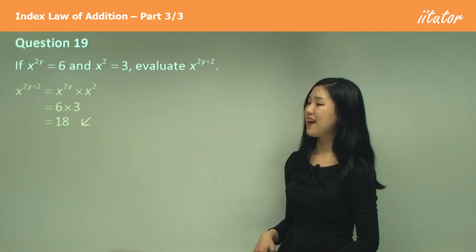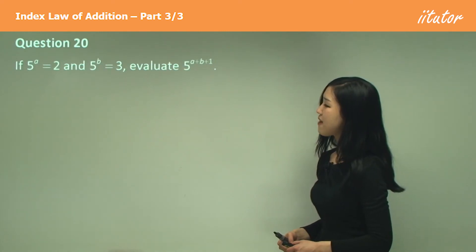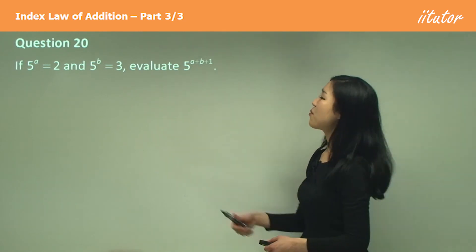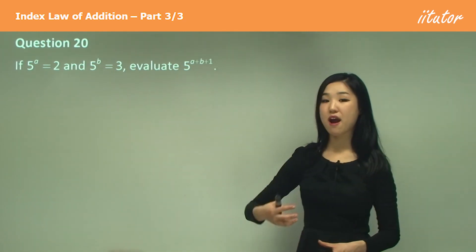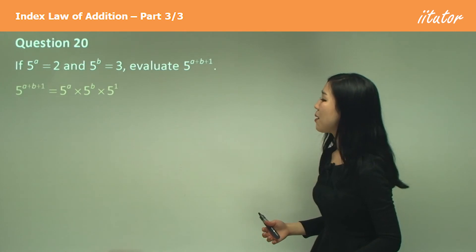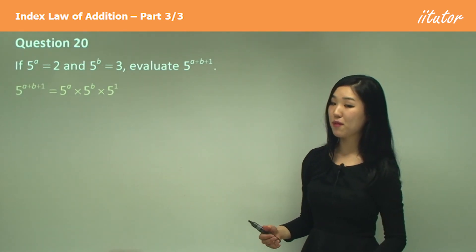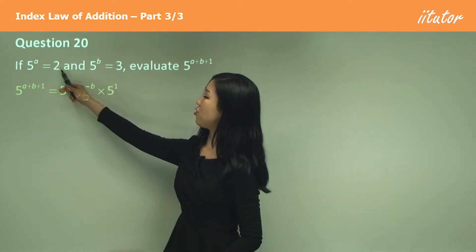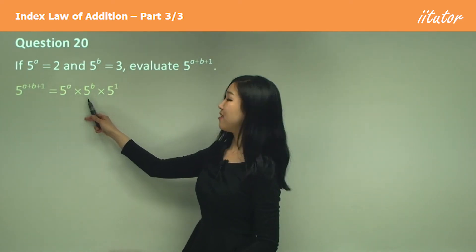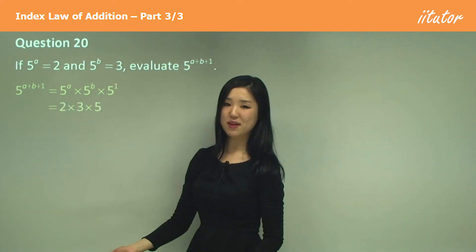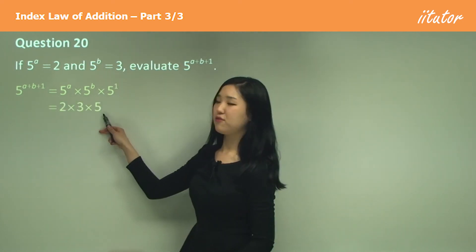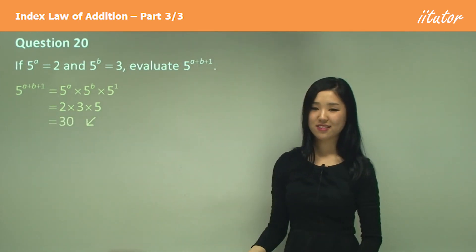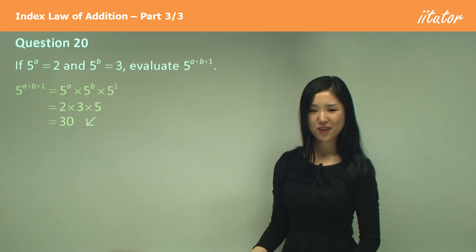They give us 5 to the power of a is 2 and 5 to the power of b is 3, and we need to evaluate 5 to the power of a plus b plus 1. We split it up: 5 to the power of a times 5 to the power of b times 5 to the power of 1. That's 2 times 3 times 5, which is simply 30. So that's the answer. Pretty easy, isn't it!